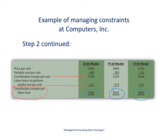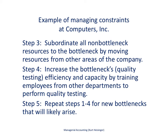This analysis shows that the most profitable model per constrained labor hour is the S150. That doesn't mean we only make the S150 at the expense of all other models, but it helps us realize where resources are best placed. Ideally, we want to alleviate the bottleneck by getting more labor hours or making more hours available to this department.